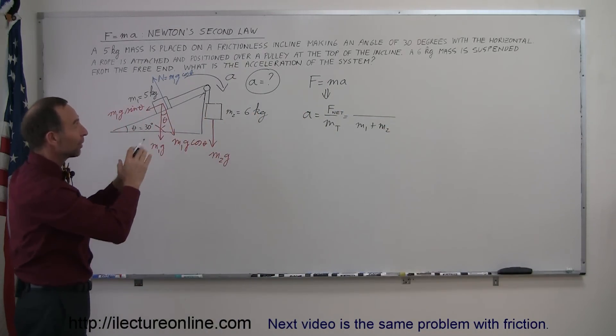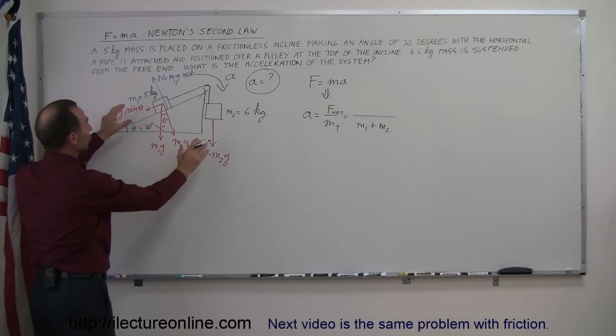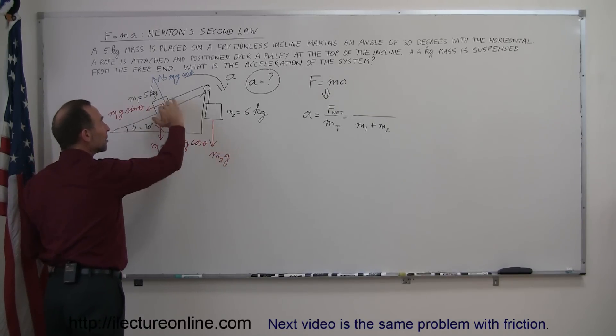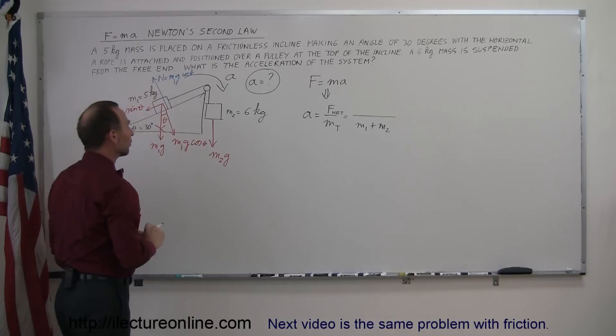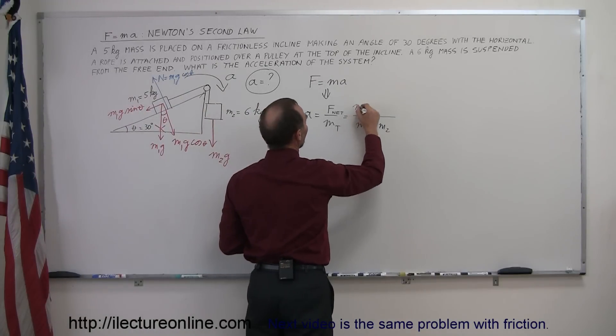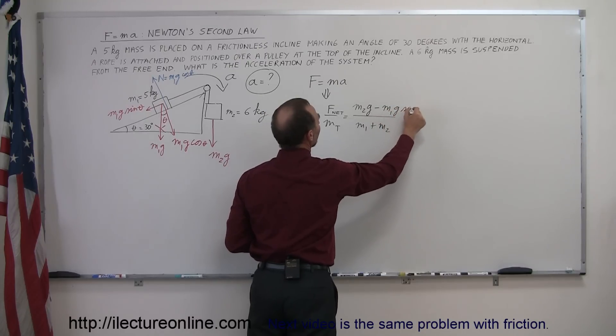And then to find what's in the numerator, I need to find the two forces, and realizing that this is aiding the assumed acceleration, and this is opposing assumed acceleration. So this will be a plus, and this will be a minus. So we can write the net force as m2g minus m1g sine theta.